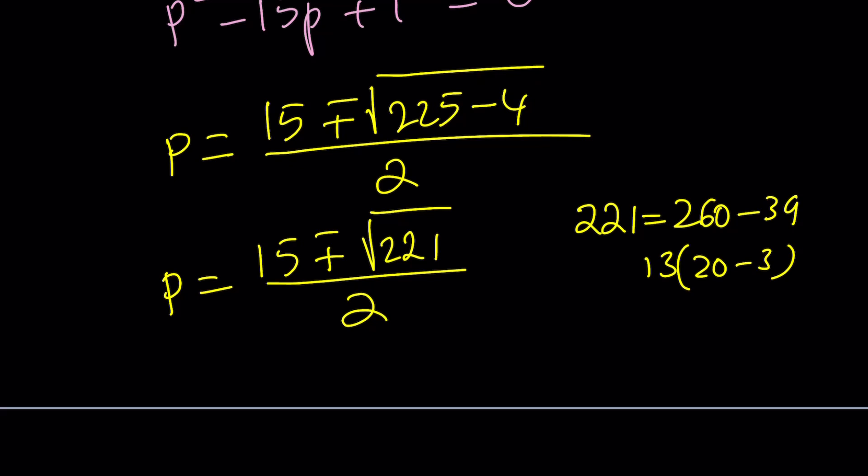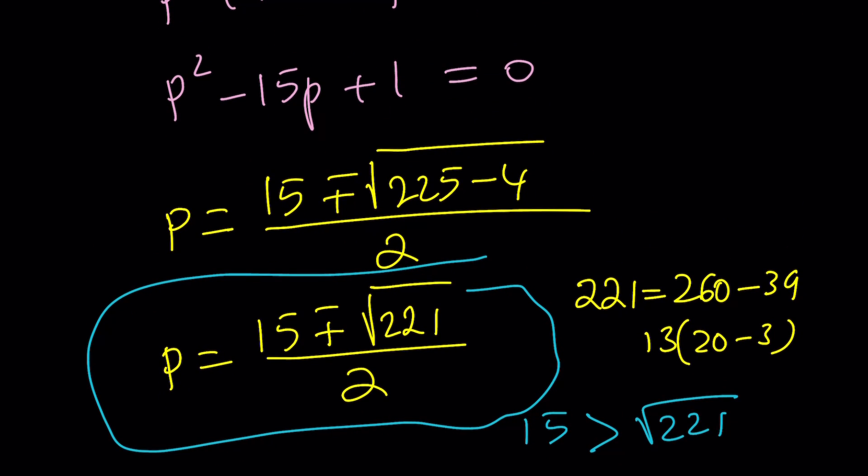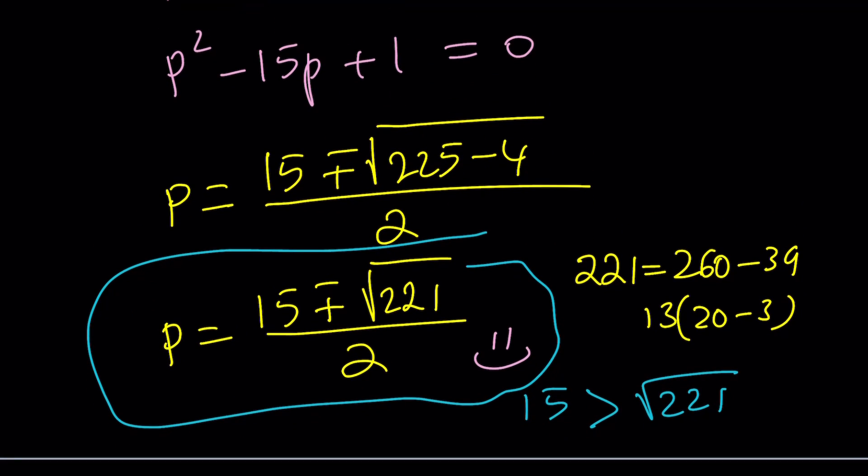But basically, these are going to be the values. By the way, 15 is greater than root 221 because 15 squared is 225. Therefore, both solutions are positive. Why is that important? Because I think xyz here are all positive, right? Is that true? Anyways, this brings us to the end of this video. Thank you for watching. I hope you enjoyed it. Please let me know. Don't forget to comment, like, and subscribe. I'll see you next time with another video. Until then, be safe. Take care and bye-bye.